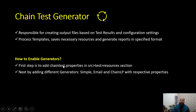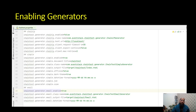To enable it, the first step is to add chaintest.properties in the src/test/resources section. Then we need to enable different generators — Simple, Email, and ChainLP — and add their respective properties. This is similar to extend.properties. We have ChainLP configuration, Simple configuration, and Email configuration.